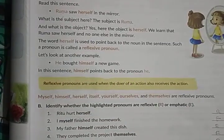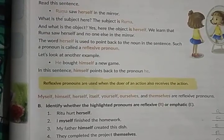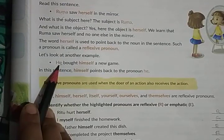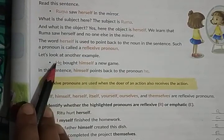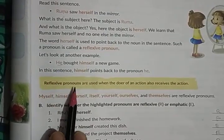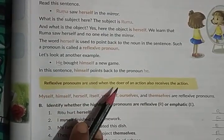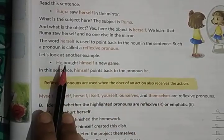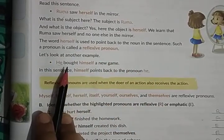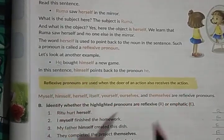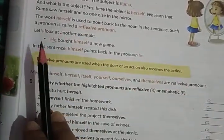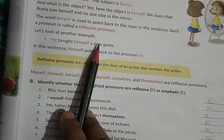The difference: when the pronoun lays stress on the noun or pronoun, it is emphatic pronoun. When the pronoun turns back to the noun or pronoun, it is reflexive pronoun. Examples of reflexive pronouns: myself, himself, herself, itself, yourself, ourselves, and themselves. You read the sentence and find out whether it is emphatic or reflexive.